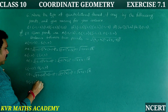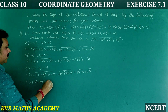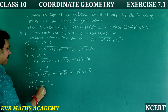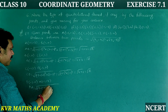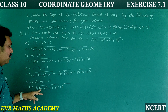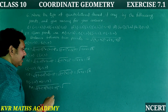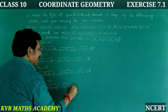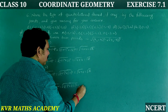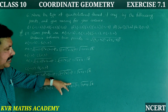Next, find DA. D is (-3, 0) and A is (-1, -2). DA = root of (-1 minus (-3)) whole square plus (-2 minus 0) whole square = root of 2 squared plus (-2) squared = root of 4 plus 4 = root 8. So all sides are equal.